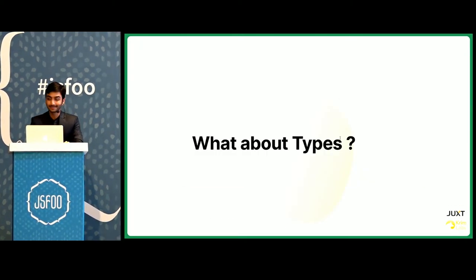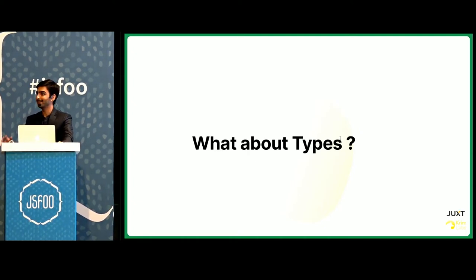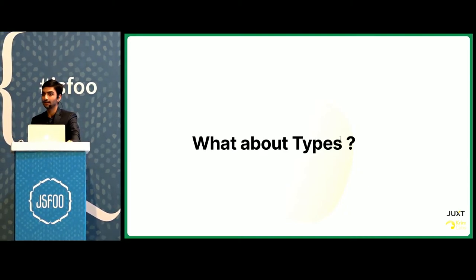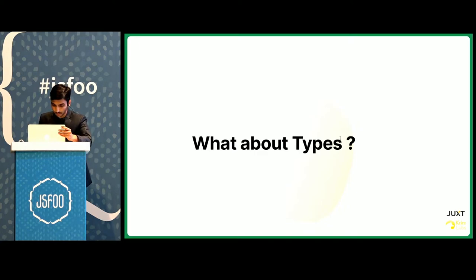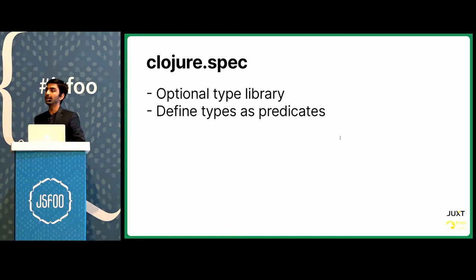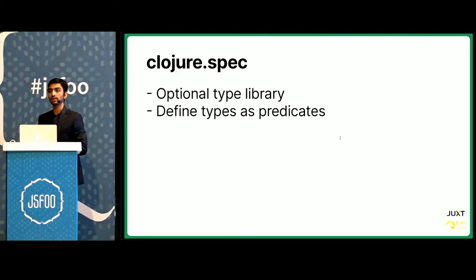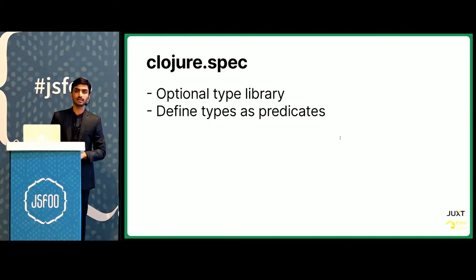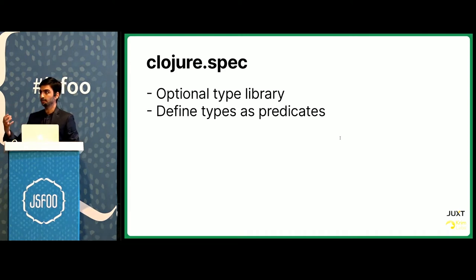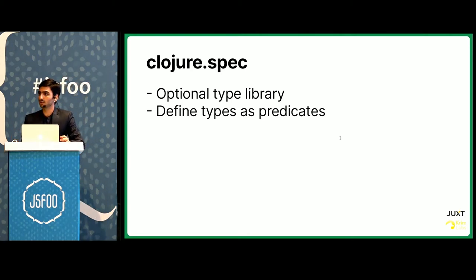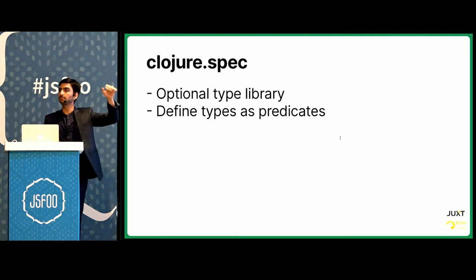But what about types? Types are important, and Clojure is a dynamically typed language. I don't like TypeScript, but I understand the importance of types — as your system grows, it's easier to reason about and extend existing platforms. The answer to types in Clojure is a library called Spec, short for specification. Spec lets you define your types as predicates — unlike ReasonML or TypeScript where types are first-class, with Spec you define types as just functions that return true or false. And it's optional, so you can apply it selectively to peripheries and third-party integrations.